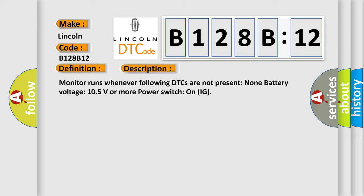Monitor runs whenever following DTCs are not present. None. Battery voltage 10.5 volts or more. Power switch on IG.